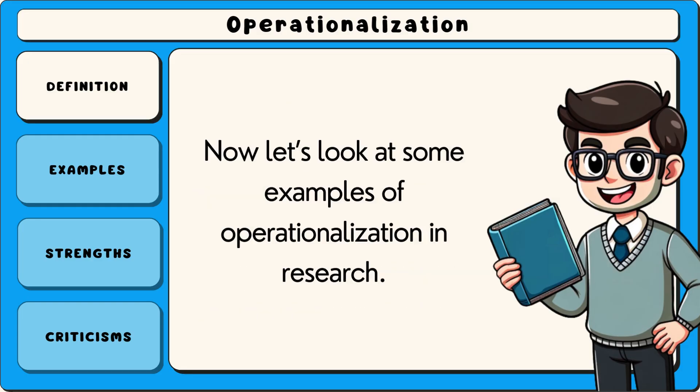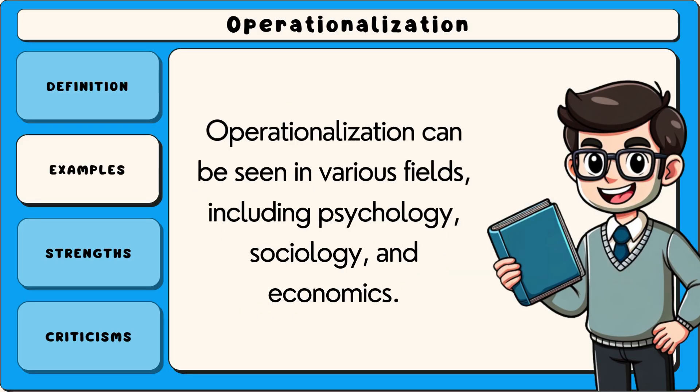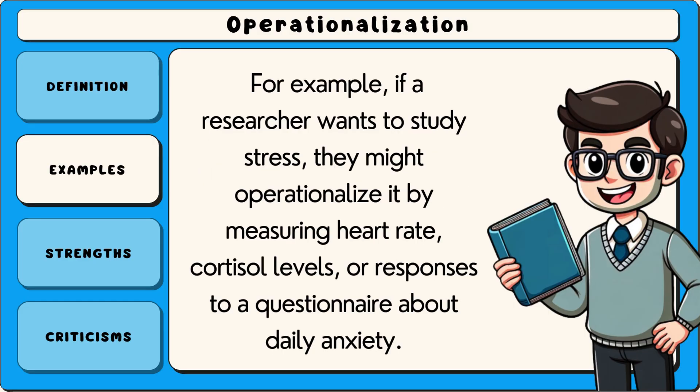Now let's look at some examples of operationalisation in research. Operationalisation can be seen in various fields, including psychology, sociology and economics. For example, if a researcher wants to study stress, they might operationalise it by measuring heart rate, cortisol levels or responses to a questionnaire about daily anxiety.